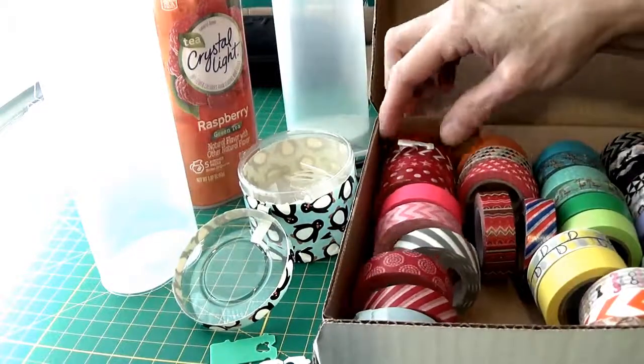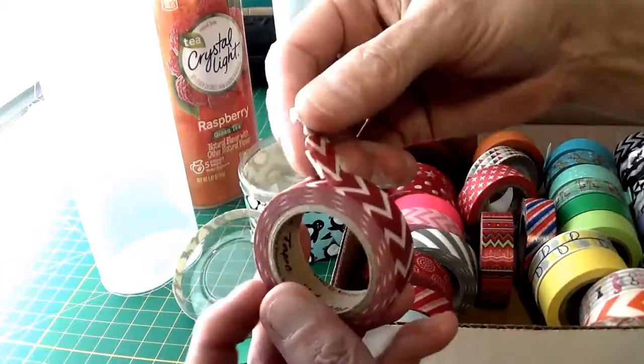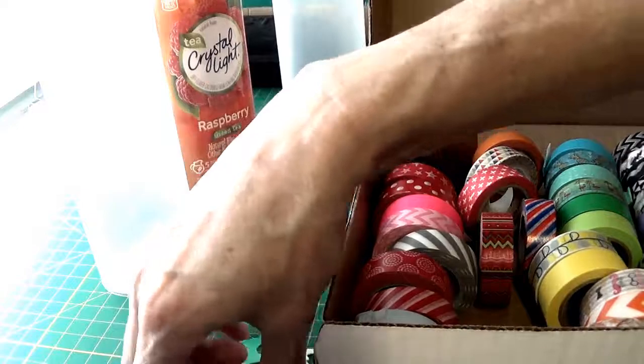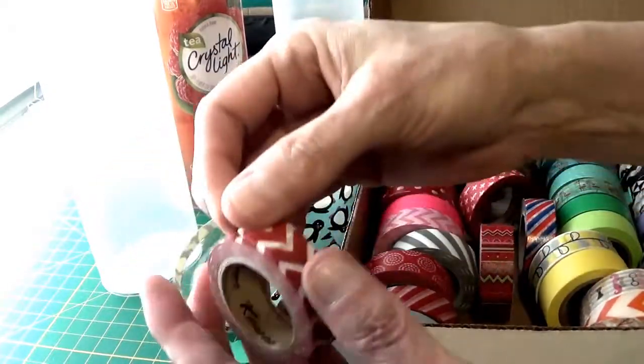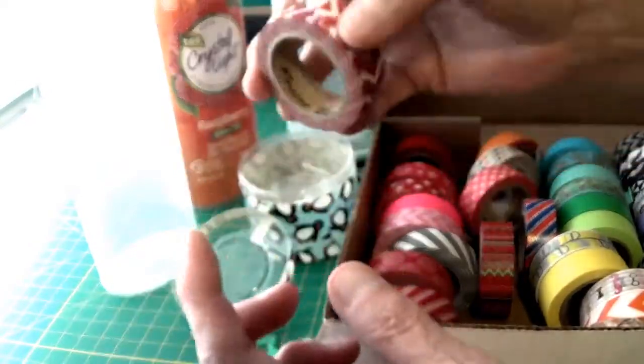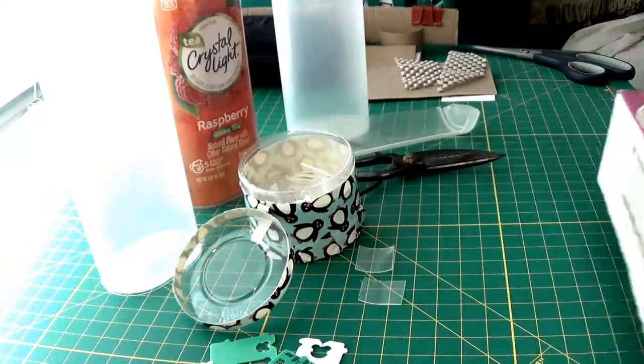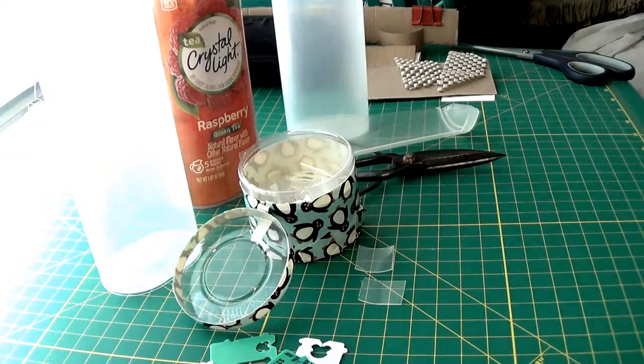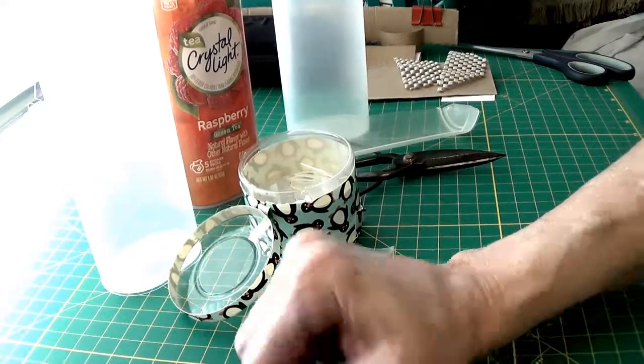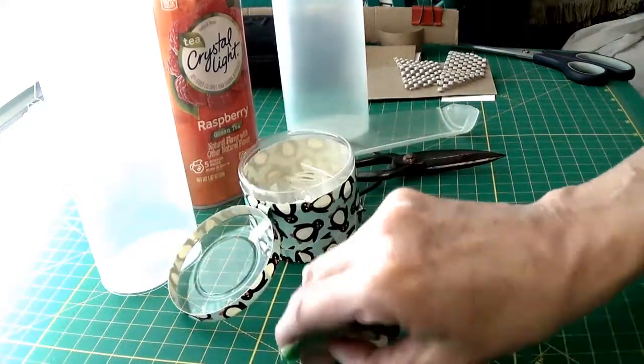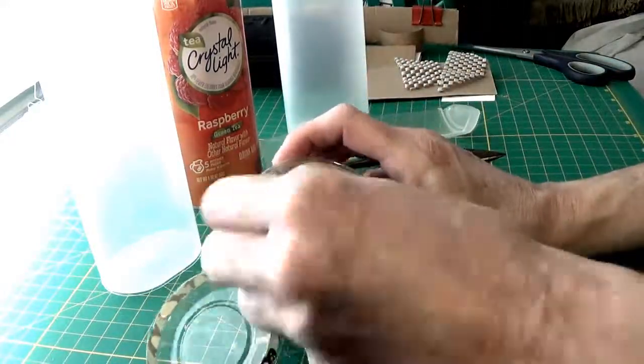I have these washi tape dispensers, but here what I did was I took a white one and cut it in half and used it for the washi tape like that. When I can't find those tabs—I just had them in the drawer scattered about—I thought I need to gather all these together and throw them in this container.